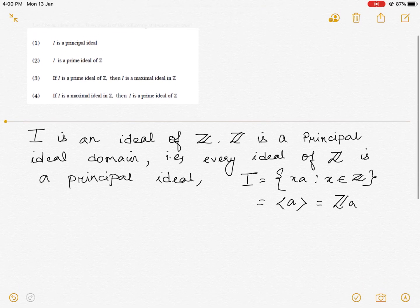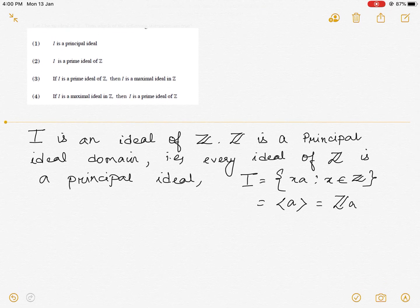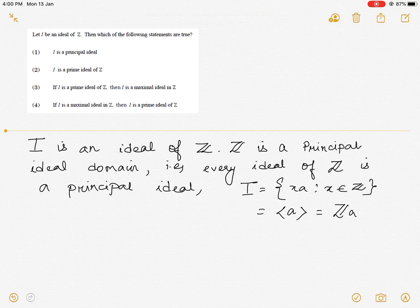Now, the first option: if I is any ideal of Z, then I is a principal ideal. Since Z is a PID, I has to be a principal ideal and hence option 1 is correct.